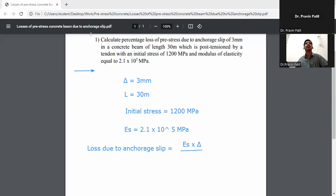Take all values in Newton per mm squared. So Es is 2.1 × 10^5, delta is 3 mm divided by L. L is in meters, convert it to mm, so 30 × 10^3, that is 30,000 mm.